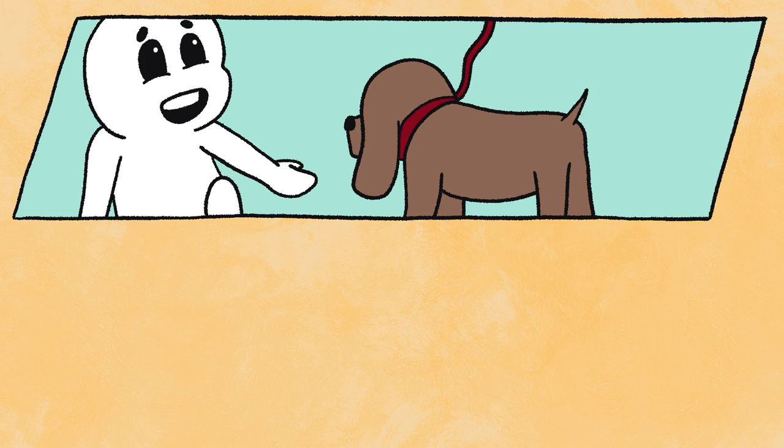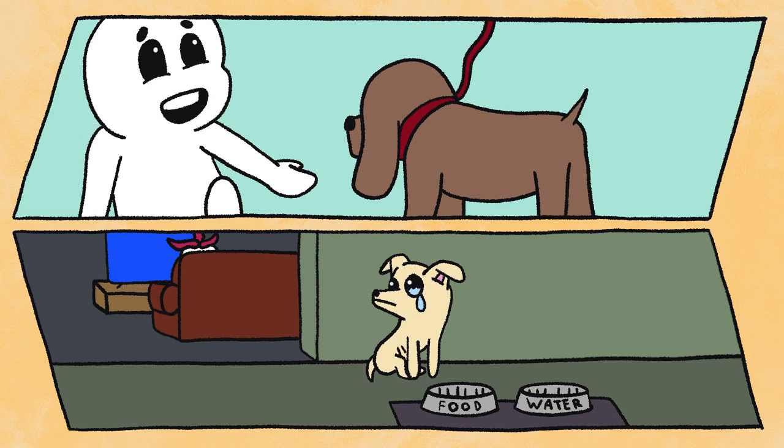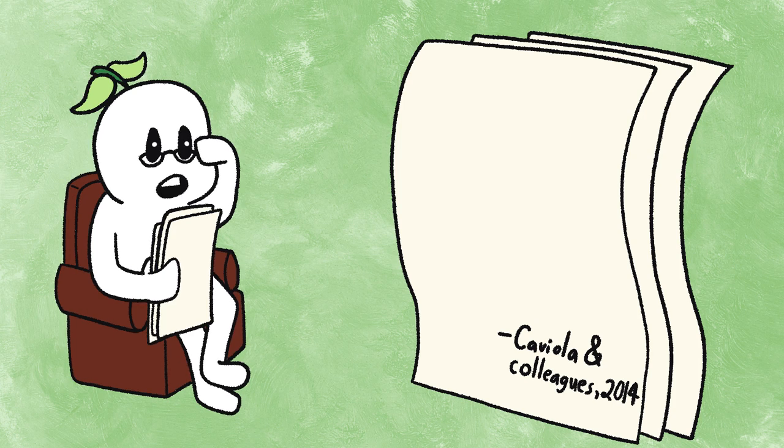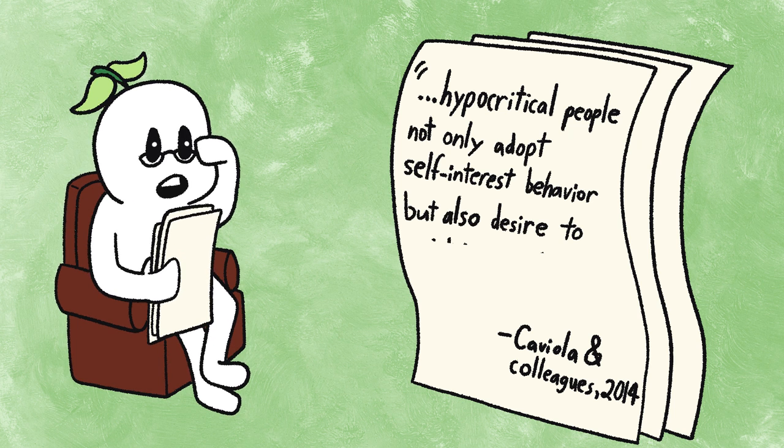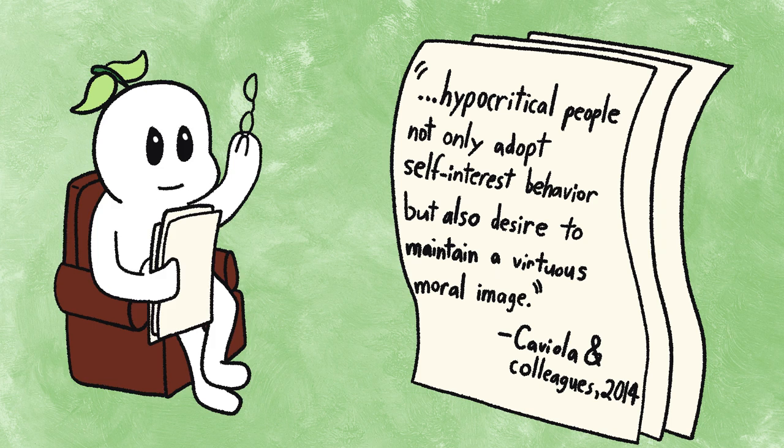They would never kick a puppy, but you know how poorly they treat their own pets. In a 2014 study by Caviola and colleagues, it was concluded that hypocritical people not only adopt self-interest behavior but also desire to maintain a virtuous moral image. They'd rather look good than actually be good.